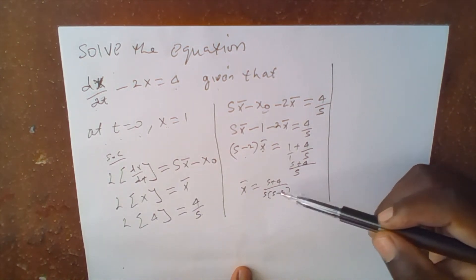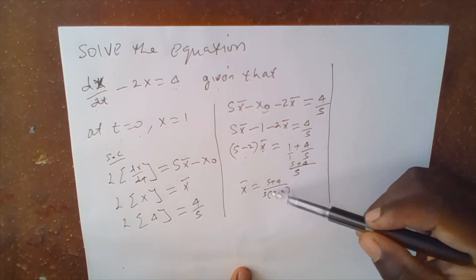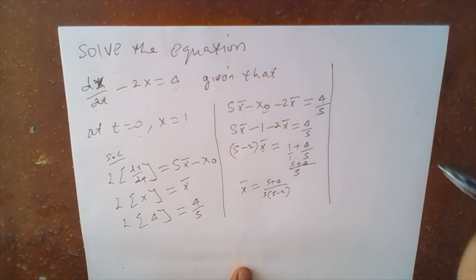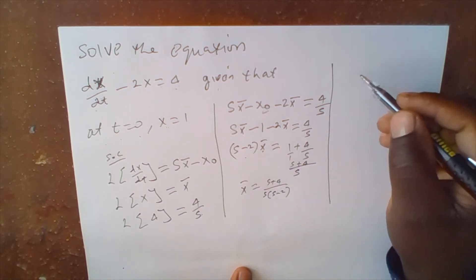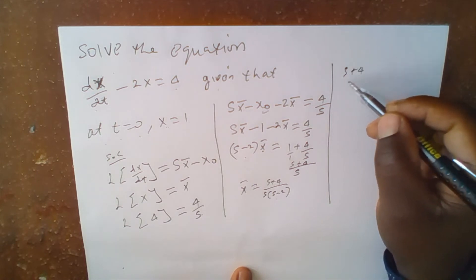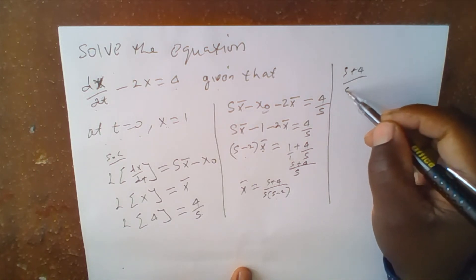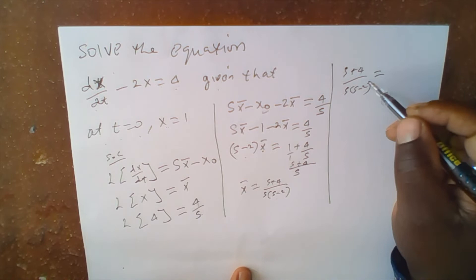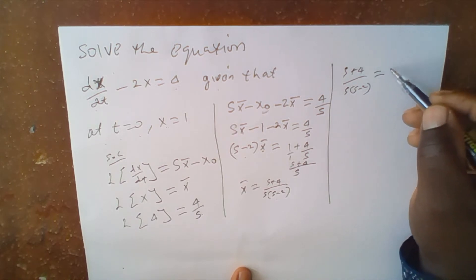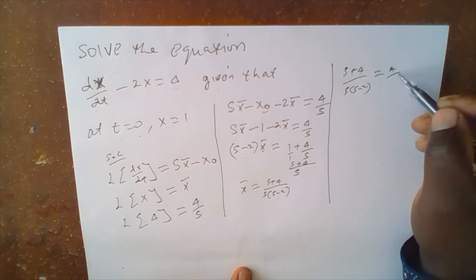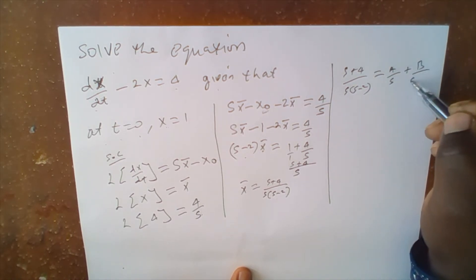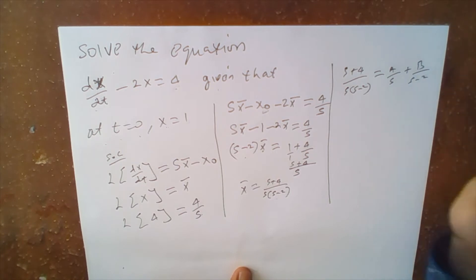We now decompose this using partial fractions. The expression (s plus 4) over s(s minus 2) is written as A over s plus B over (s minus 2).